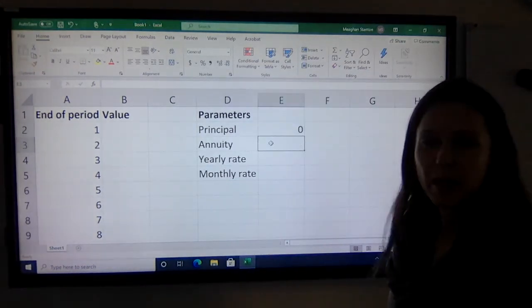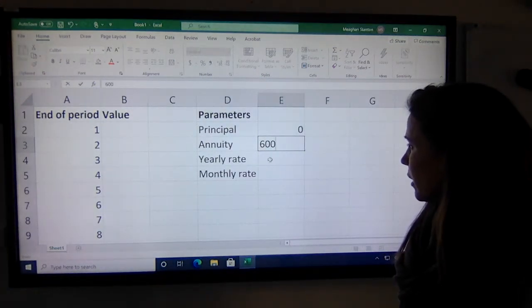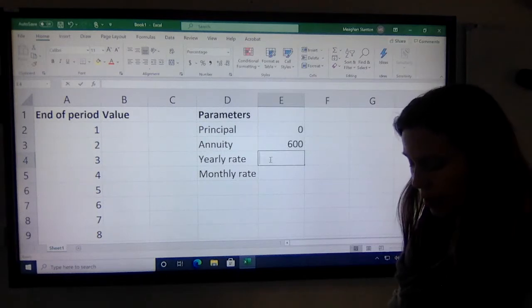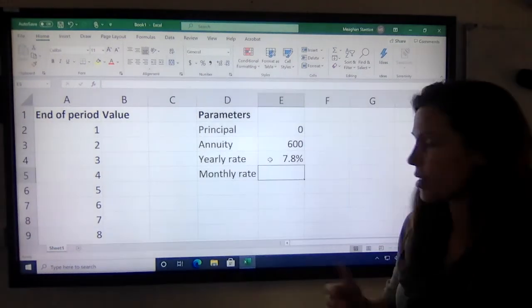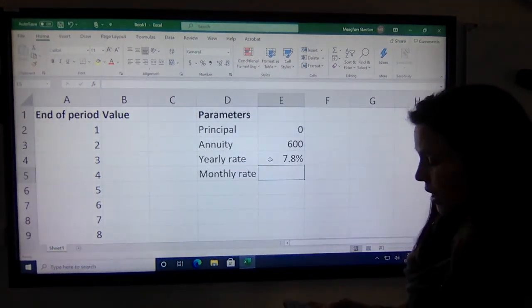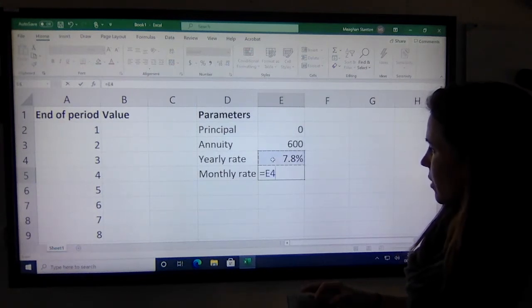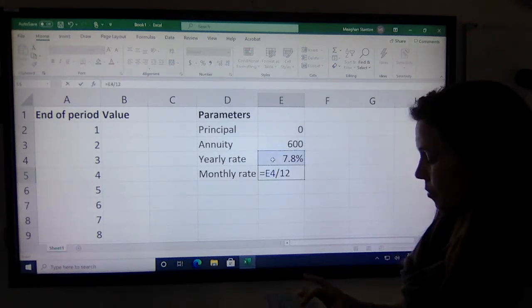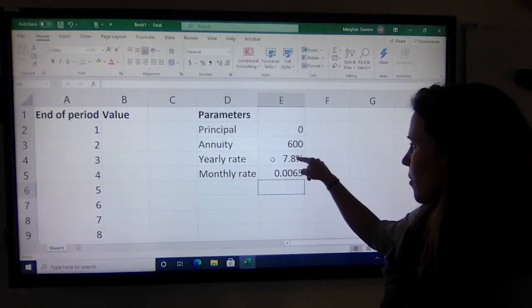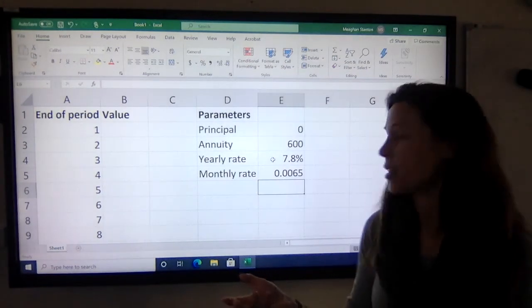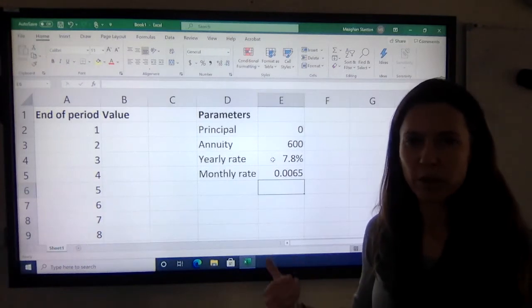The annuity is the amount that's paid in, the regular installment. Let's put in $600. The yearly rate was 7.8%. I can put it in just like that or as a decimal. For the monthly rate, I can even get Excel to calculate it. I'll write equals, refer to the yearly rate, and then divide by 12. That way if I'm doing another question and change the yearly rate, it will automatically change the monthly rate for me. Now there's really only three boxes I need to change for a different question.